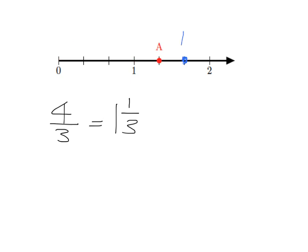Now let's put a point there at B. We can see that as being one and two-thirds. So at point B, we're at one and two-thirds. Let's remind ourselves how we turn that back into an improper fraction. What we do — if you remember from last year — is we say one, the whole number, times three, because that tells us how many thirds you've got. And then we add on those two extra little thirds. So we have one times three, which is three, plus two, which is five. So what we have is five-thirds.